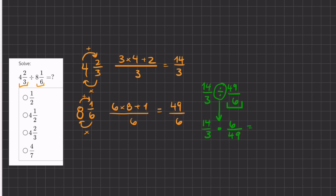Okay, and now we just multiply it across. We have 14 times 6, which will give us 84, divided by 3 times 49, which is 147.